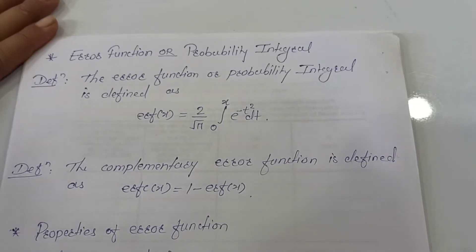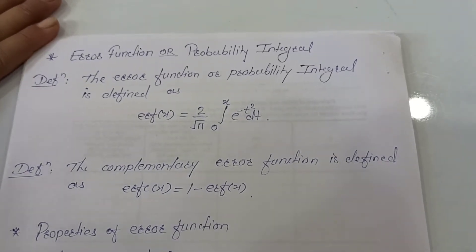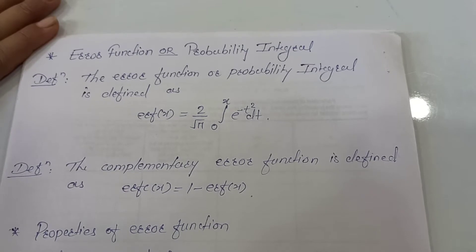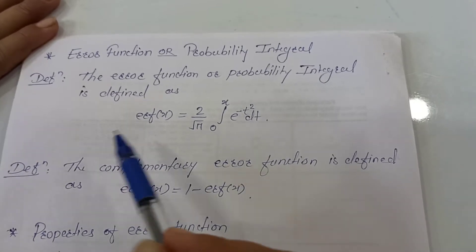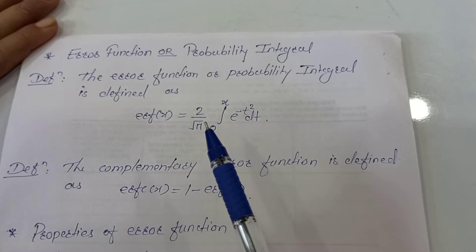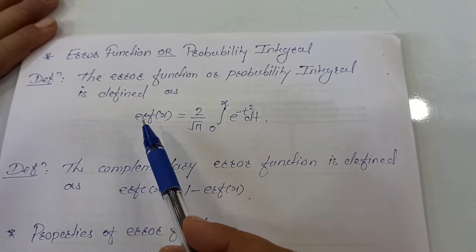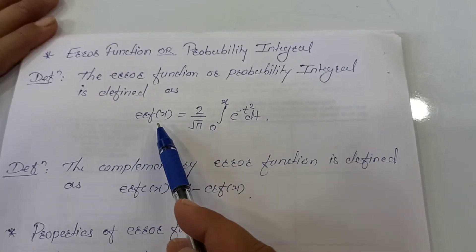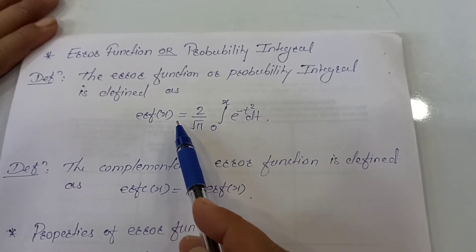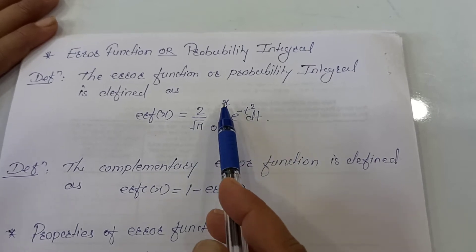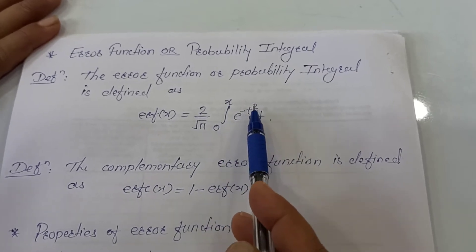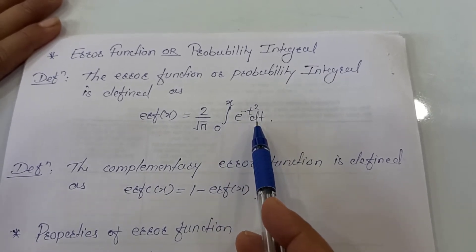Hello everyone, welcome back to my channel. In this lecture we will be studying the error function or probability integral. The error function is defined as Erf of x equals 2 upon root pi, integration 0 to x, e raised to minus t squared dt.